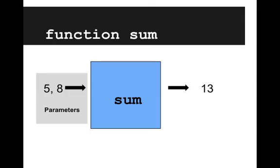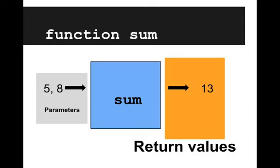So let's look at it with a different diagram. Sum is the function, sum is like a machine, and something comes into the machine and something goes out. So our parameters are 5 and 8, 5 and 8 go in and 13 comes out, that's the return value.